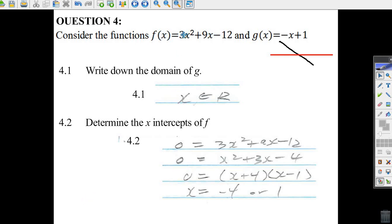We take f here. This is y equals. Make y equals 0 to get an x-intercept - that's your first step. 0 equals 3x² plus 9x minus 12. Divide everything by 3: 3 divided by 3 is 1, 9 divided by 3 is 3, minus 12 divided by 3 is minus 4.